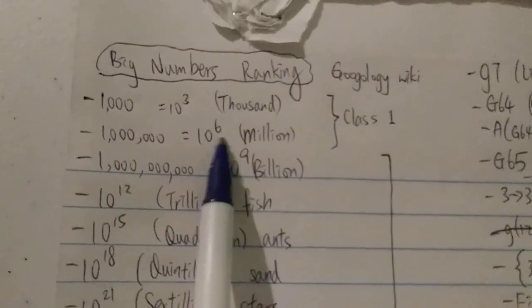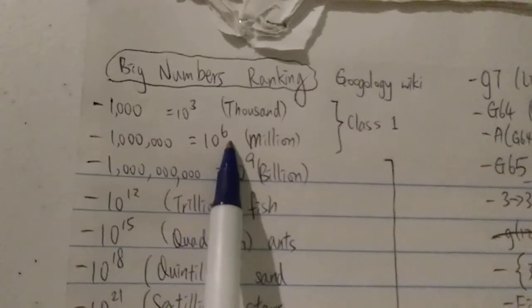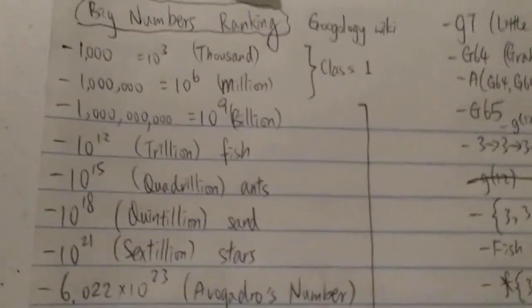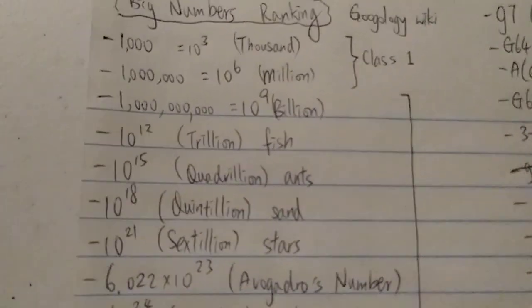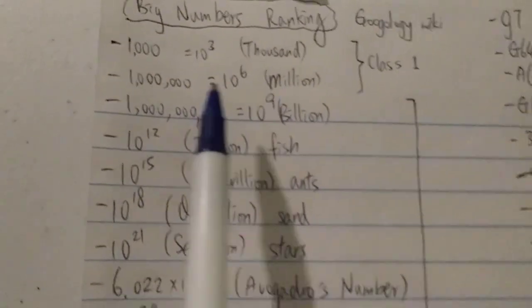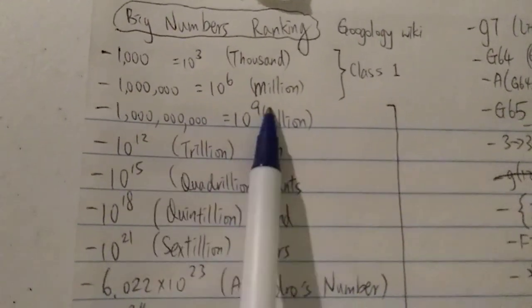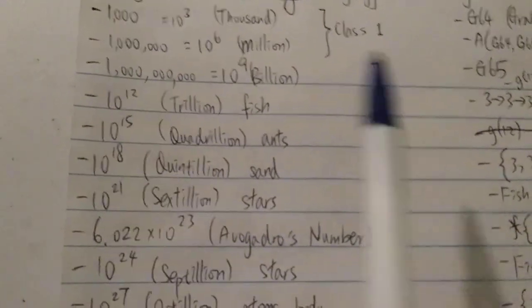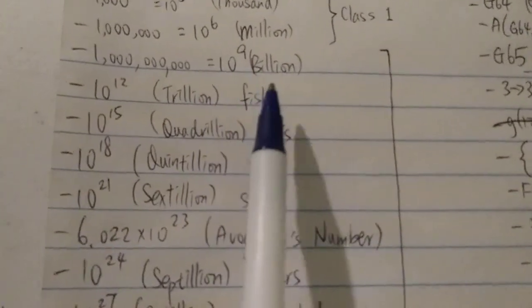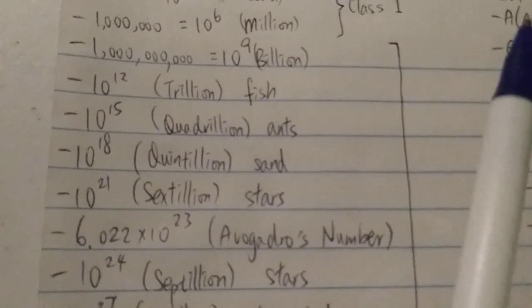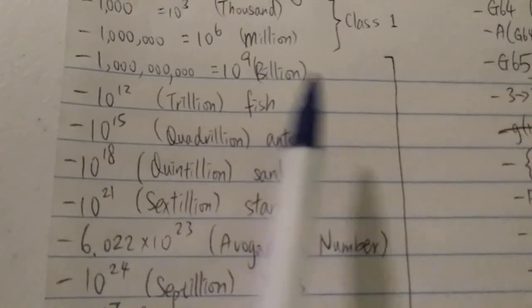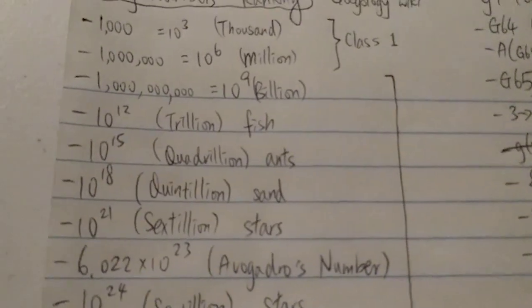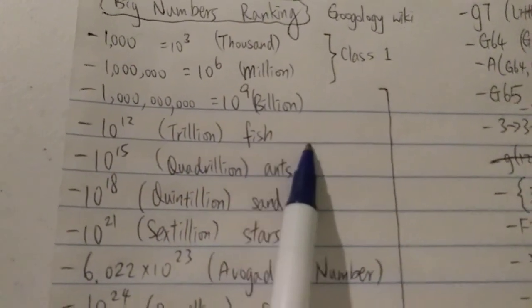Next we have 1 million, which is 1 followed by 6 zeros, 10 to the 6. On this video I'm going to use the short scale, not the long scale used in the UK. Next we have 1 billion, which is 10 to the 9 with 9 zeros. Next we have a trillion, 10 to the 12, with 12 zeros. Trillion is probably the biggest number most people would know, and we use it for things like the GDP of the US.